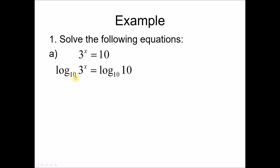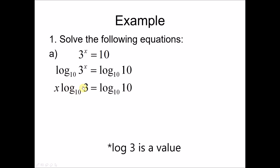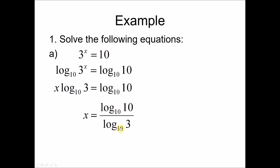So we have log base 10 of 3 to the power of x equals to log base 10 of 10. We log both sides here, and why we want to use logarithm is because of the power law where we can bring the x to the front. So we rewrite this as x log base 10 of 3 equals to log base 10 of 10. We move log base 10 of 3 to the right hand side, so it becomes log base 10 of 10 over log base 10 of 3. We know that log base 10 of 10 is 1 — log base A of A is always 1. You key this into your calculator and get the answer.